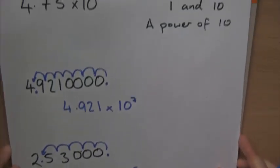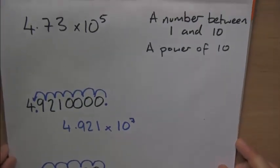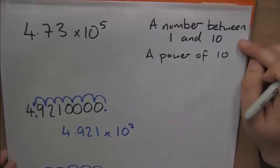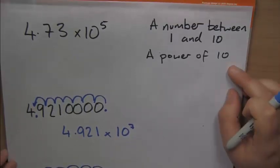That's how we convert numbers to standard form. We need a number between 1 and 10, and it's a power of 10.